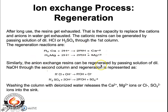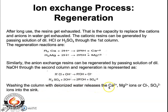Similarly, the anion exchange resins can be regenerated by passing a solution of dilute NaOH through the second column. The OH⁻ ions get trapped into the resin, and what comes out is chloride ions, sulfate ions, or any type of ions originally bound to the anion exchange resin. The resin beds — both the cationic and anion exchange resins — are then washed with deionized water, passing all the calcium ions, magnesium ions, or any other cations and anions out into the sink. This is the process of regeneration.